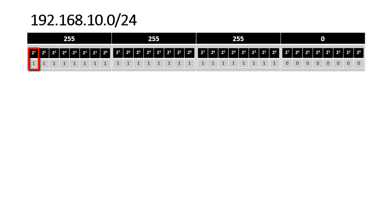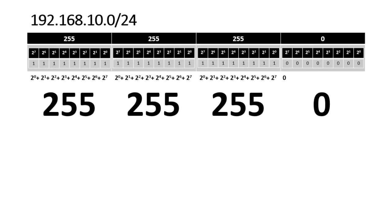If you add all these network bits the total number you get is 255. So the default subnet mask of a Class C IP address is 255.255.255.0. The last block is 0 because it represents the host bits — you can calculate the subnet mask only from the network bits, not the host bits.